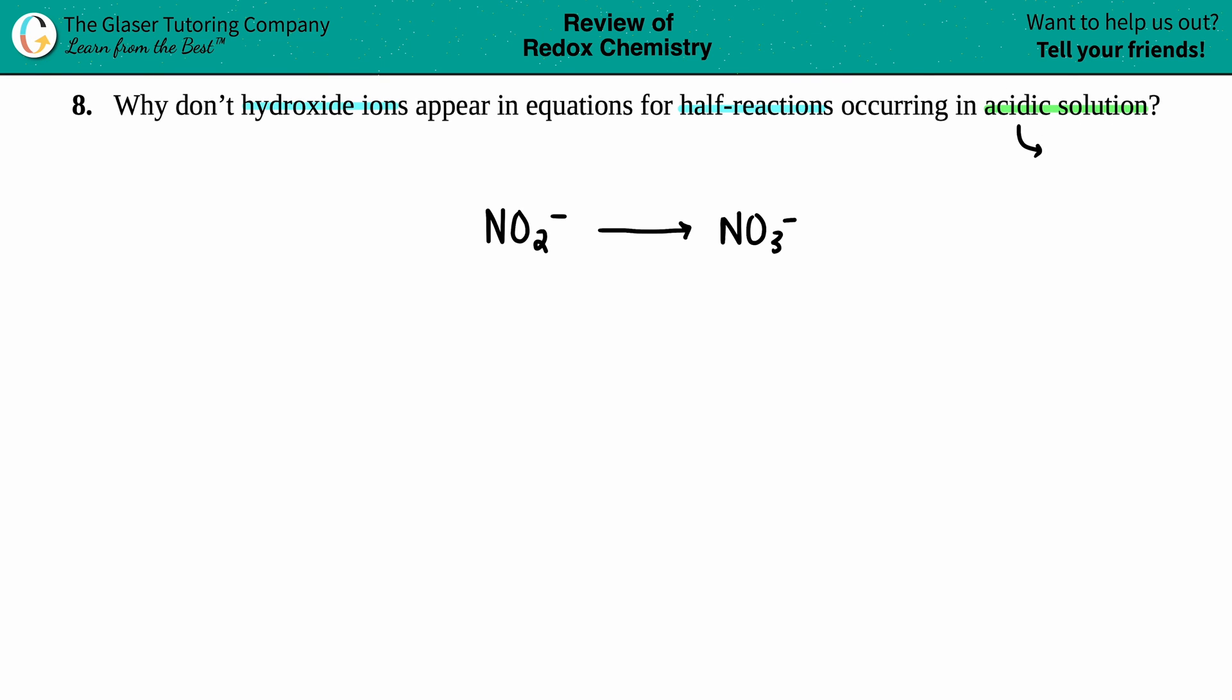Hydroxide ion is the OH- and generally speaking hydroxide ions are basic. So when you do balance these equations in acidic solutions, you will end up with H+ in your half-reactions.